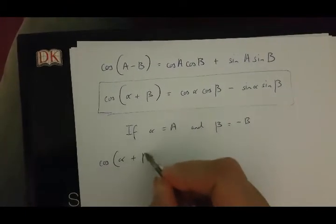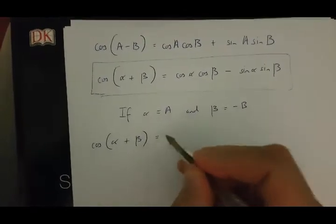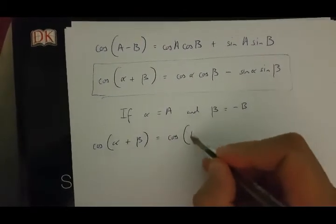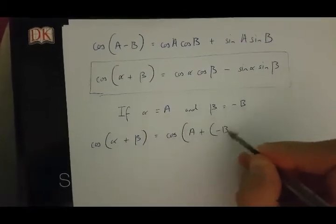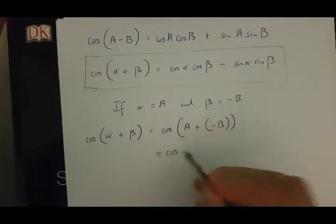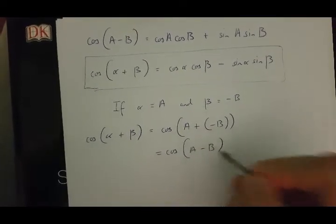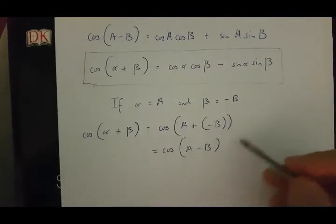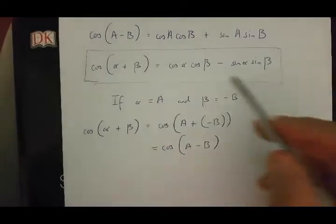cos(alpha + beta) is going to be cos(A + (-B)). And this is in fact cos(A - B). Now because of this formula over here,